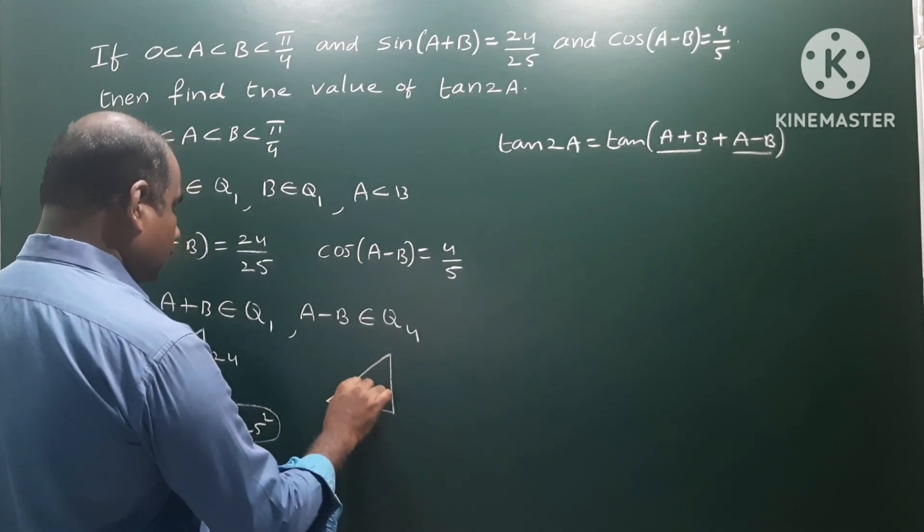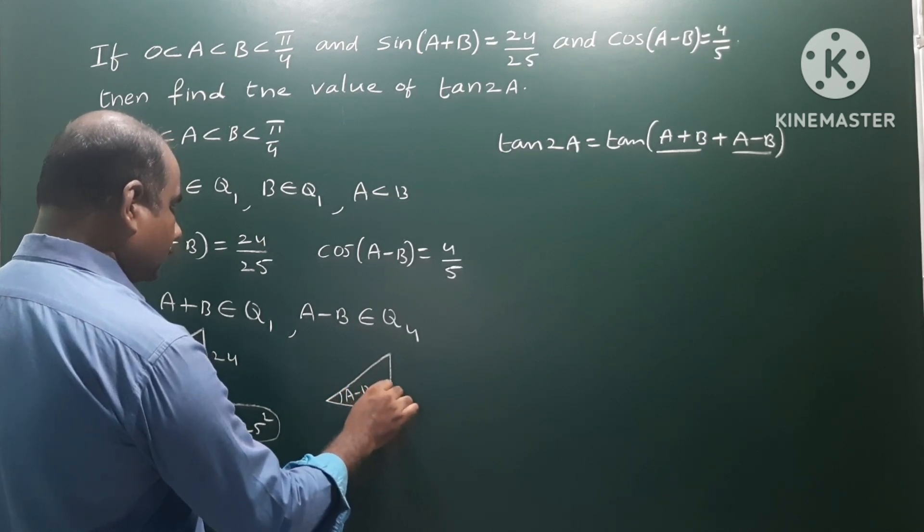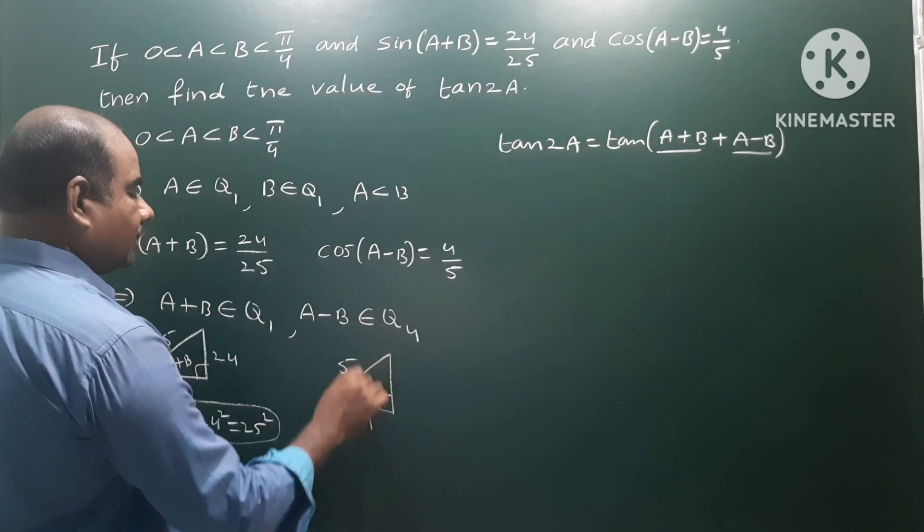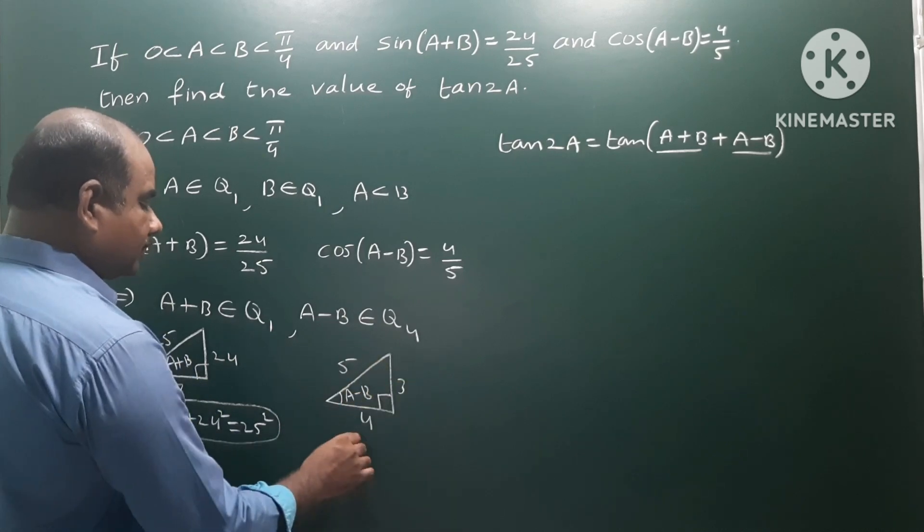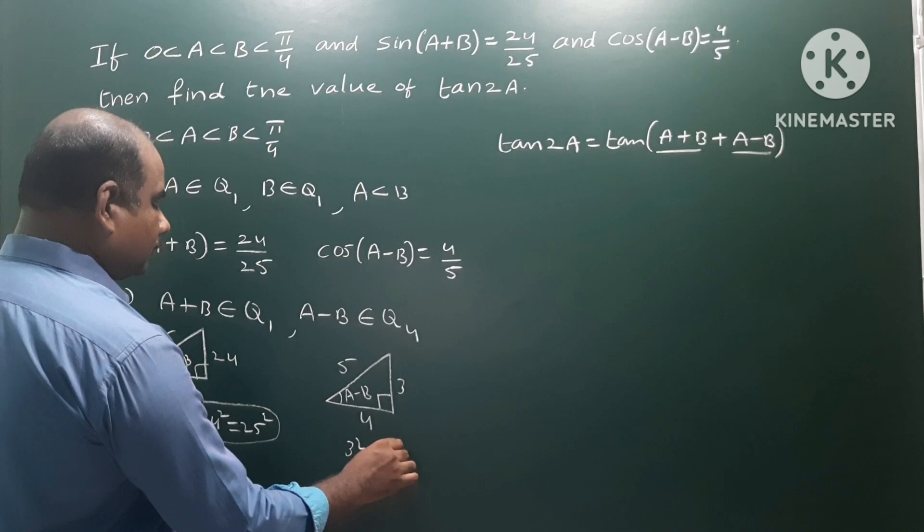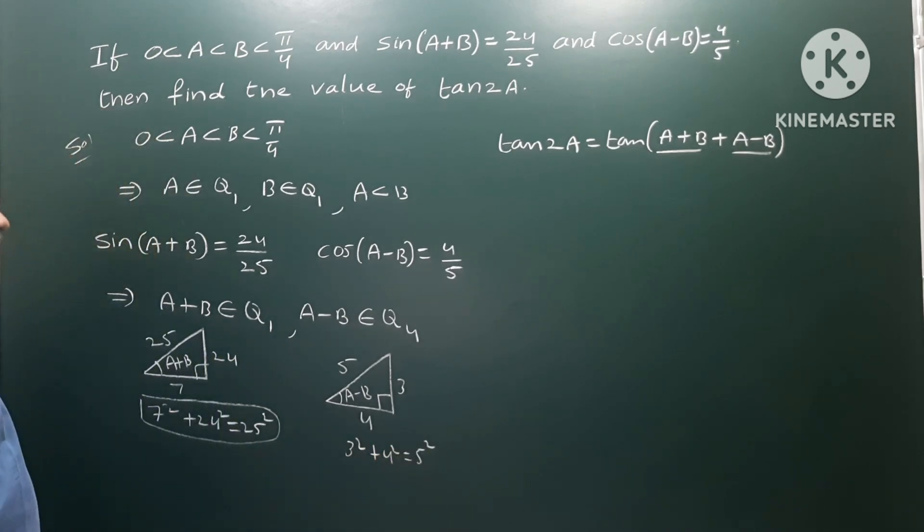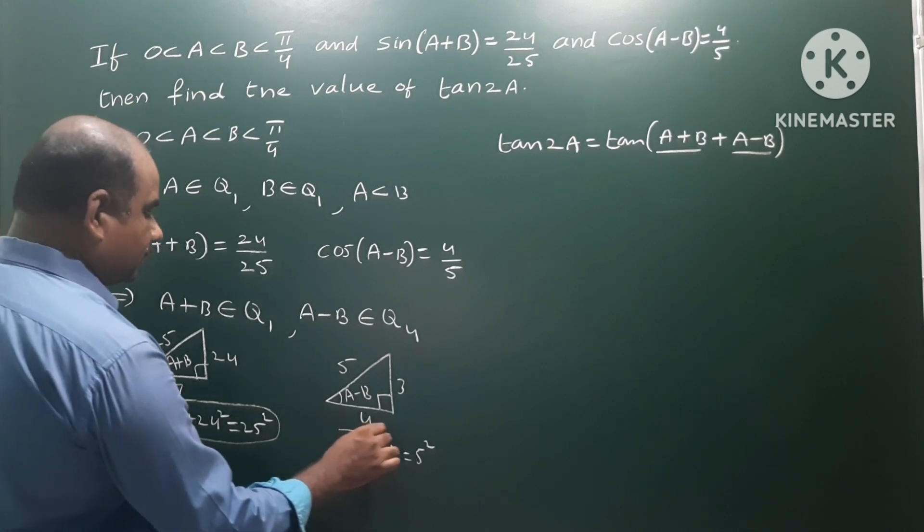For A-B, this is the right angle triangle. Cos is adjacent side by hypotenuse, so adjacent is 4 and hypotenuse is 5. Using 3² + 4² = 5², the opposite side is 3.